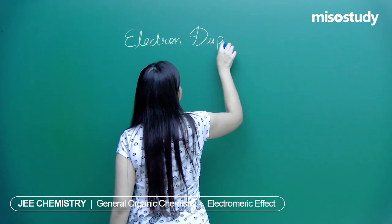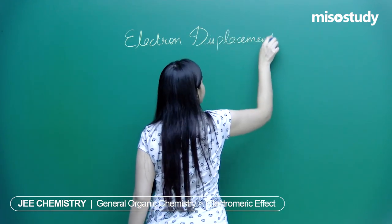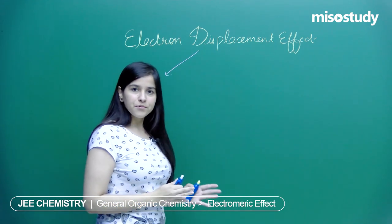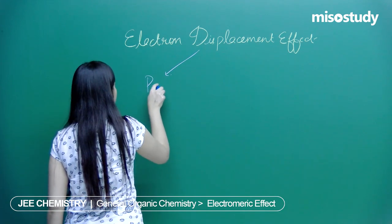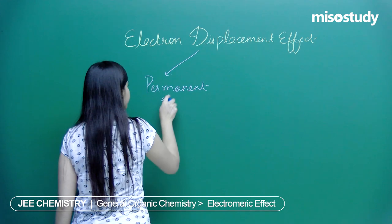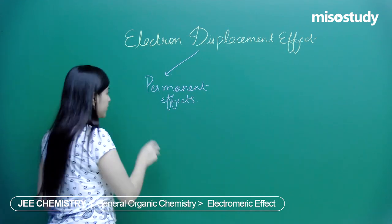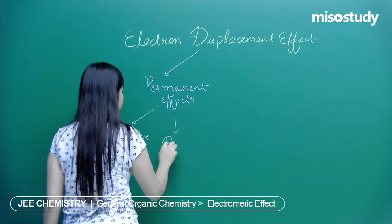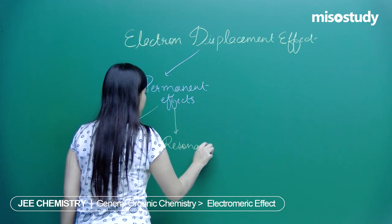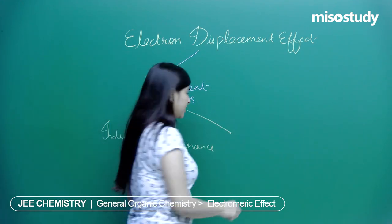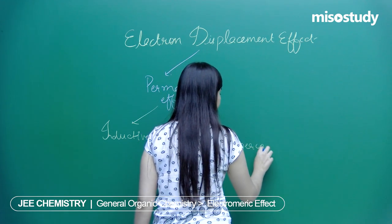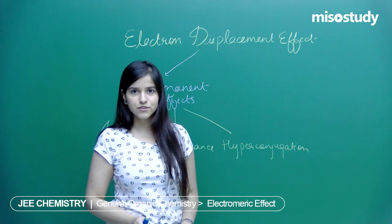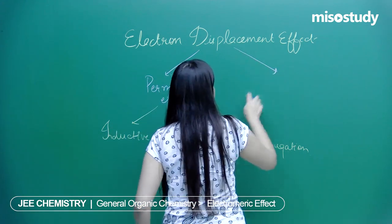Under electron displacement effects, we have two categories: temporary and permanent effects. We have already covered the permanent effects, which include first the inductive effect, next resonance, and the third one we discussed in the last session is hyperconjugation. I'll be taking up a question related to hyperconjugation to test your knowledge on whether you have revised the concept.